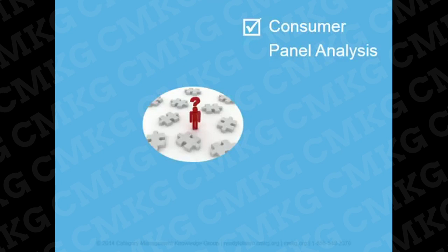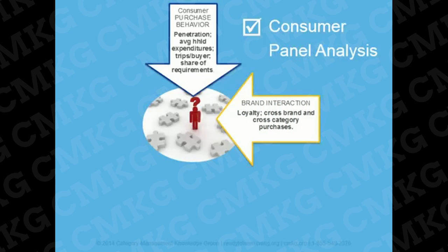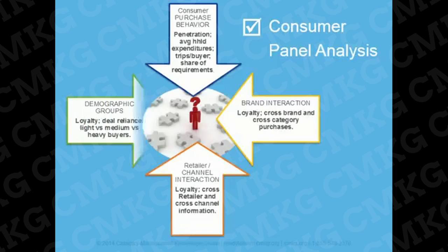Consumer panel data can provide different perspectives about the consumer. There are many consumer purchase behavior measures available in panel data, which give insights into how the consumer shops the category. There's information available on brand interaction, which helps to understand where leakage is coming from and what competitive brands are stealing volume. Retailer interaction data is available as well, which helps to understand leakage across retailers and channels. This is available at a corporate or category level. Demographic information is also available by category or with a corporate look.